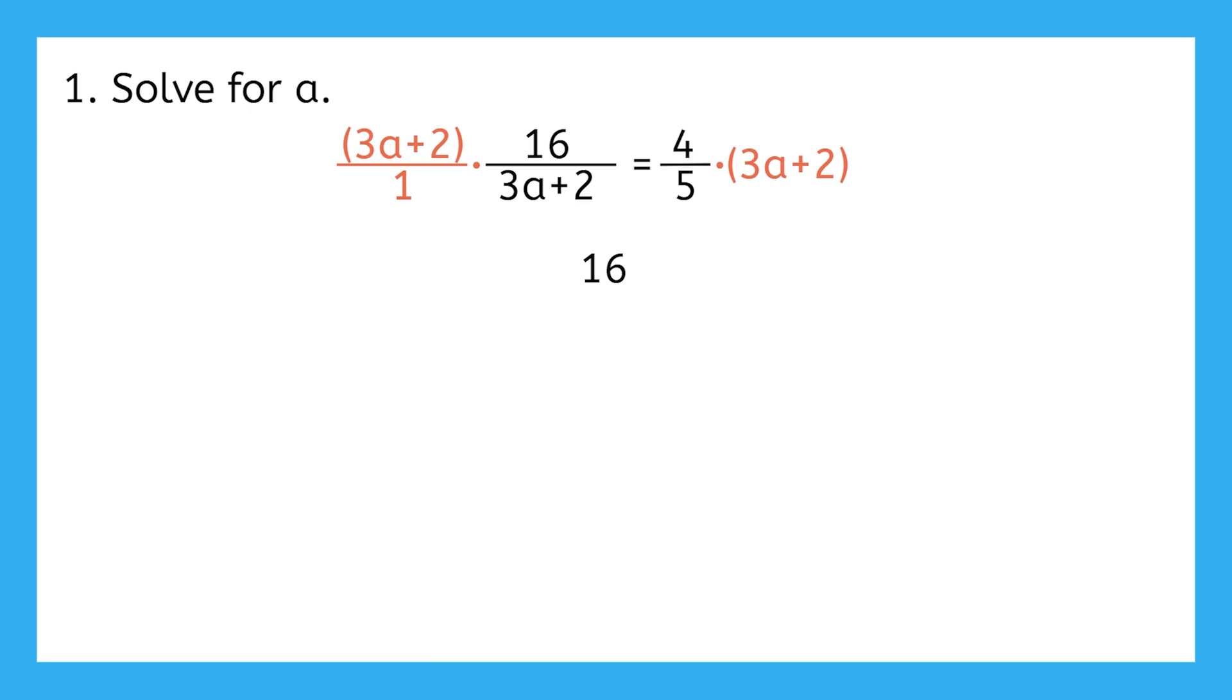On the right side, we can put 3a plus 2 over 1 to make it easier to see that we need to multiply this whole expression by 4. Since we know that 3a plus 2 won't cancel with anything on this side, we can distribute the 4 to multiply both terms to simplify. What will we get when we distribute? That will make this side look like 12a plus 8 over 5.